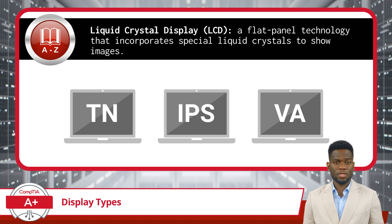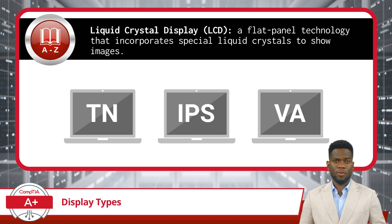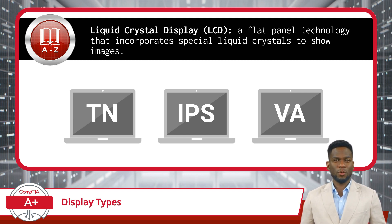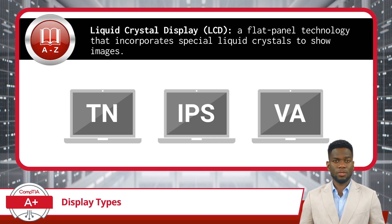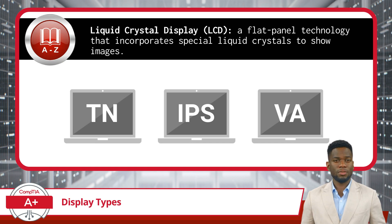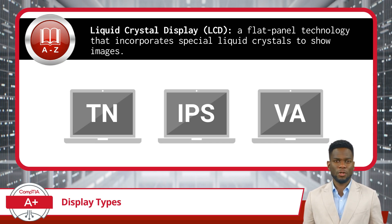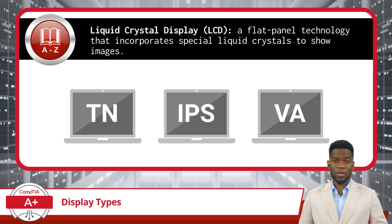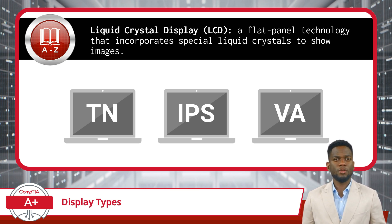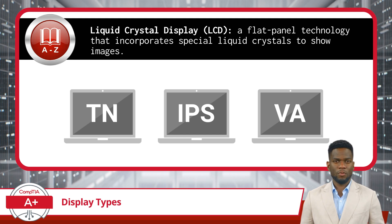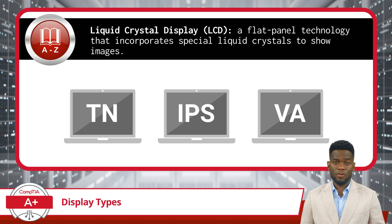TN, or Twisted Nematic Displays, are super fast. They're not the best at showing colors accurately, and you need to look at them straight on for the best view. But for things that move really quickly on the screen, like in video games, they're great. As for VA, or Vertical Alignment Displays, they are more balanced. A VA display is better at showing colors and can be seen from wider angles than the TN-type display, but not as good as the IPS. However, it is fairly good at showing dark blacks and color contrasts, which is great for watching movies or in rooms where the ambient light level changes frequently.